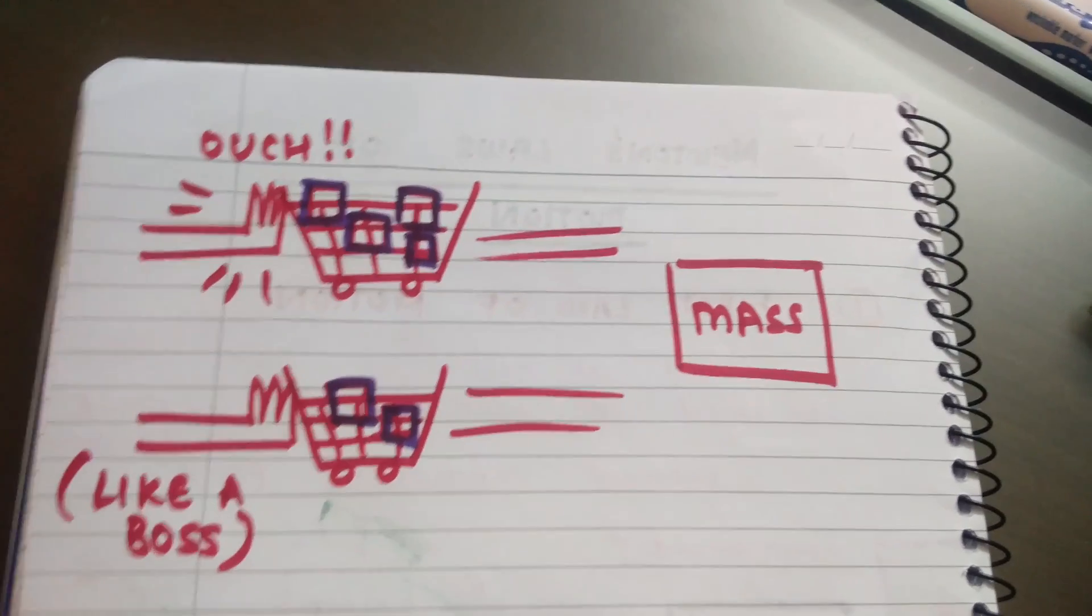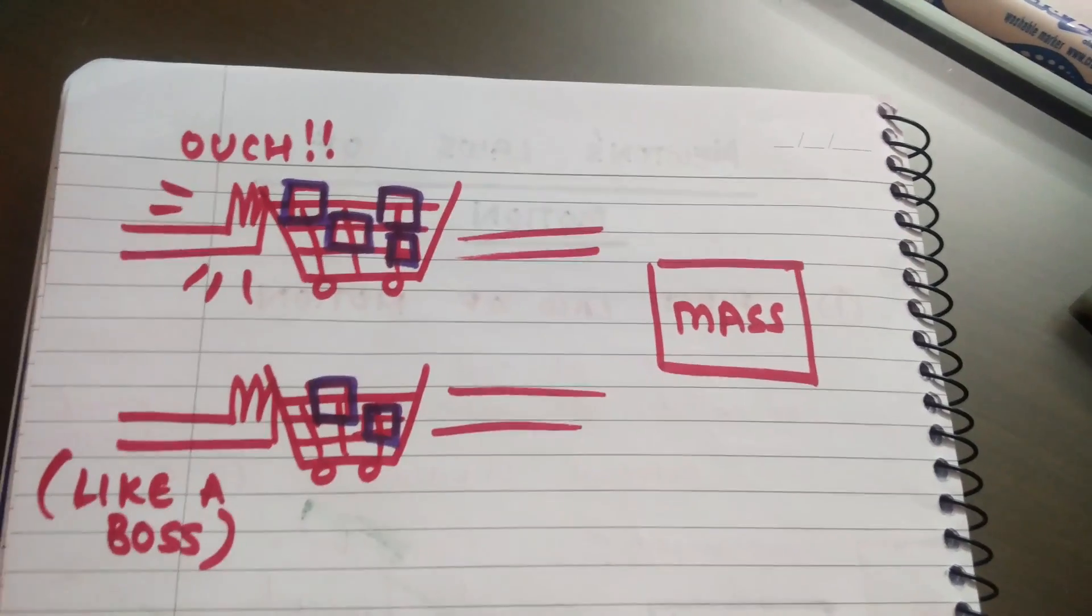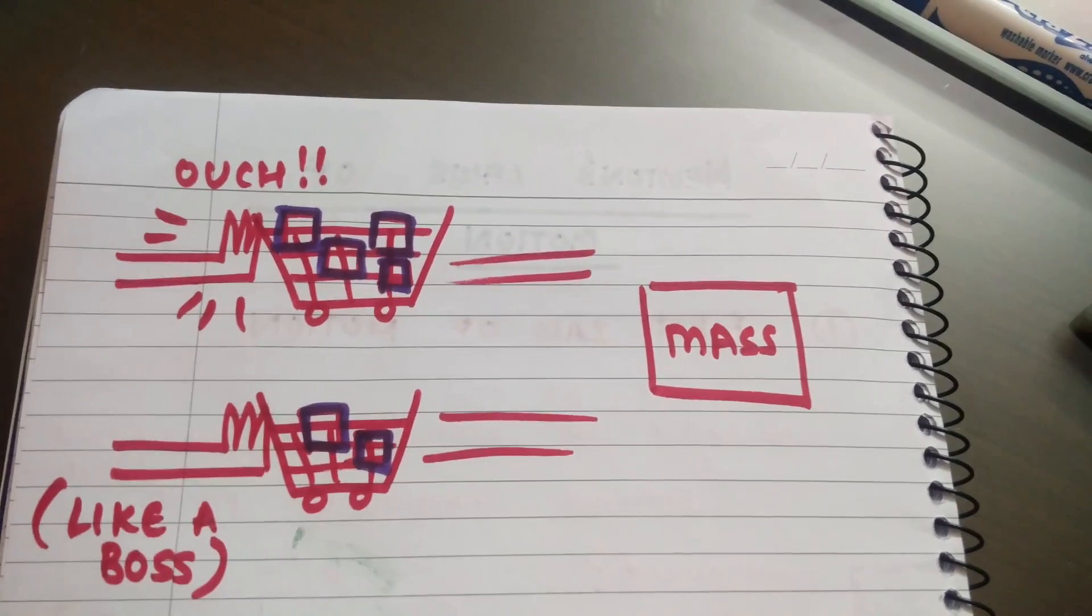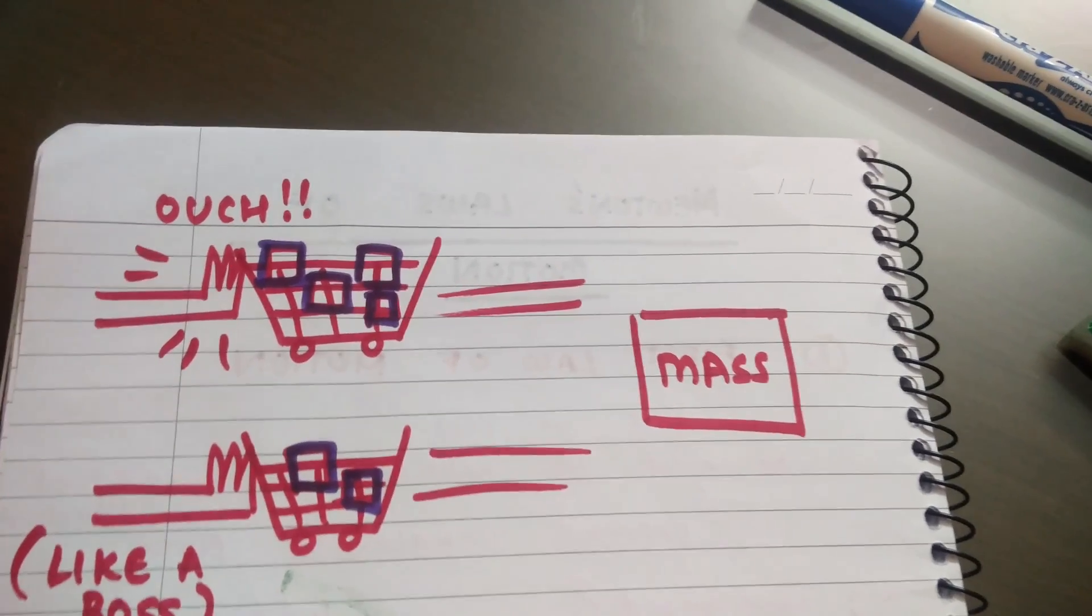Obviously, the trolley that is mostly empty. You can easily stop the trolley which is mostly empty, but it's rather difficult to stop the trolley which is loaded.